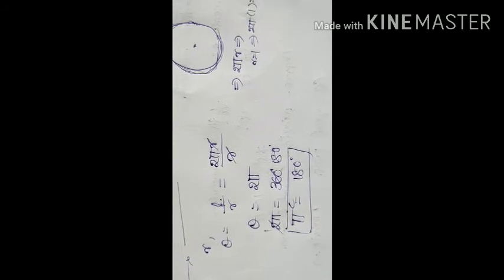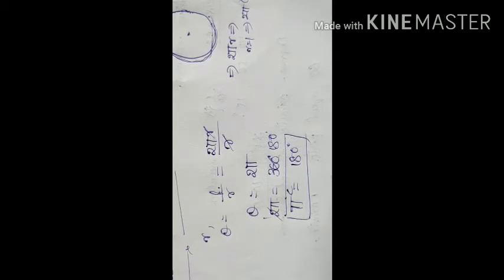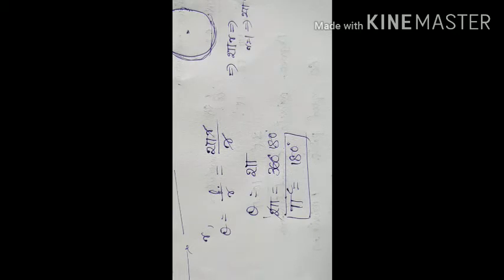So π radians equals 180 degrees. Using the approximate value of π as 22/7, we find that 1 radian is approximately 57 degrees 16 minutes, and 1 degree is approximately 0.01746 radians.